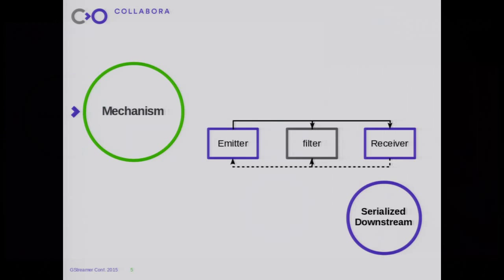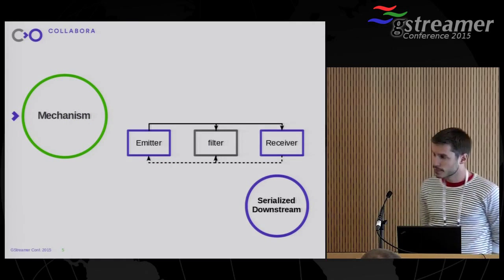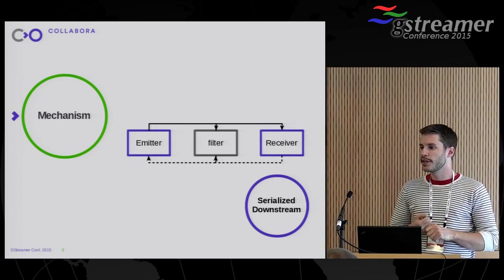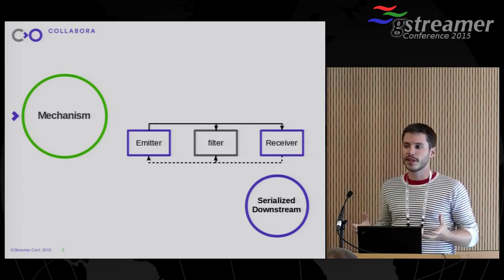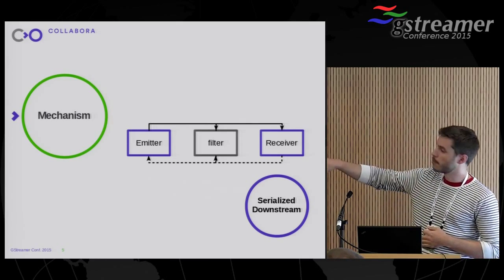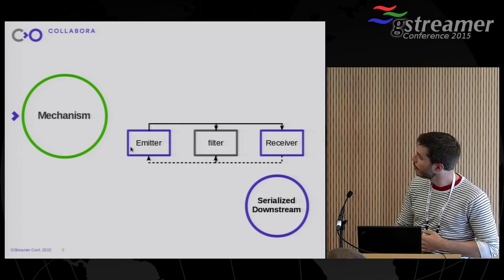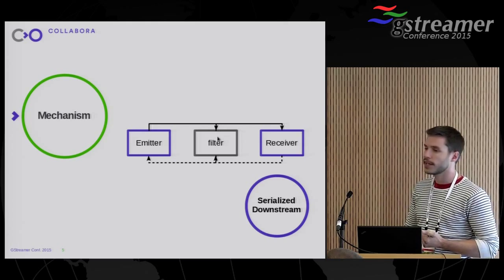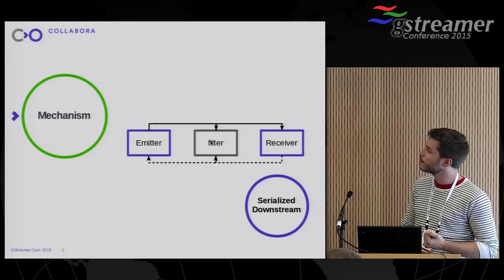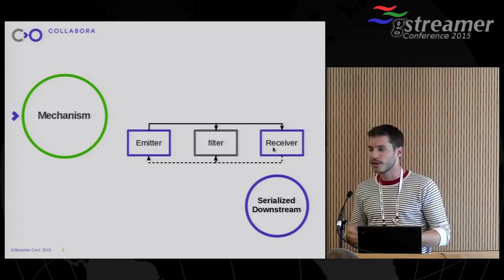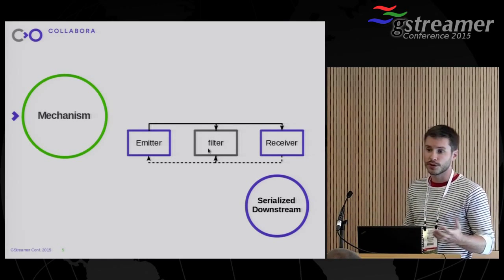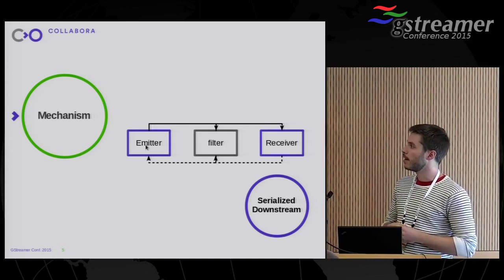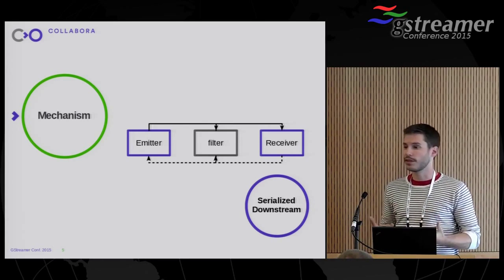What is the allocation query? It's a mechanism — a query. It's an object that you create from one element upstream the pipeline and send downstream. Most often, it gets filled by elements when it comes back. The query will travel from the emitter, go through the filter — which would be a pass-through filter or a filter doing in-place transformation that is not allocating — and then pass to the receiver. The receiver fills the query. It comes back to the filter, which might do some changes or not. Then the emitter gets the actual result: all the information specifying what the element downstream wants as an allocation.